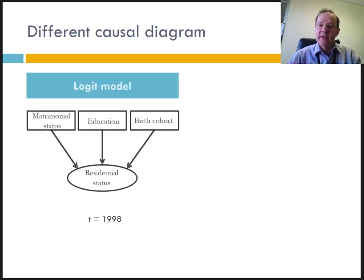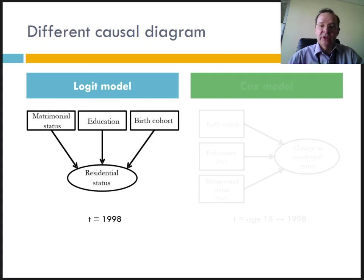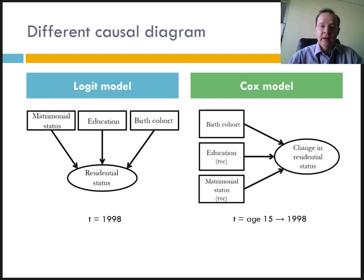The causal diagrams are therefore different in the two models. For the cross-sectional model, the dependent variable is a status at a fixed time, and the vertical arrows indicate that the relationships with the independent variables do not take time into account. On the contrary, for the longitudinal model, the dependent variable is a change of status, and the horizontal arrows indicate that the relationships take time into account. Some independent variables also vary with time, which is indicated by TVC, which means time-varying covariate.